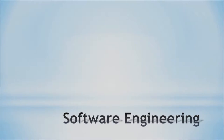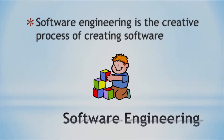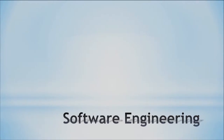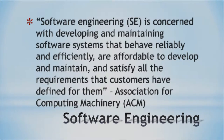Y'all probably think engineering like building bridges and that kind of thing, buildings, but we have something called software engineering. My definition: it's the creative process of creating software. Now, here's a more highfalutin definition. Software engineering — SE — is concerned with developing and maintaining software systems that behave reliably and effectively, are affordable to develop and maintain, and satisfy all the requirements that customers have defined for them. That's the official definition from the Association for Computing Machinery, the ACM.